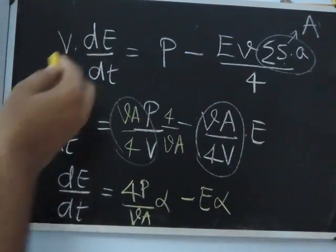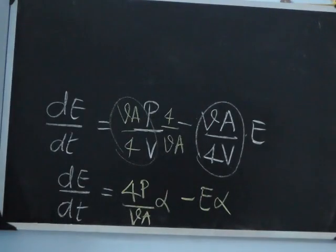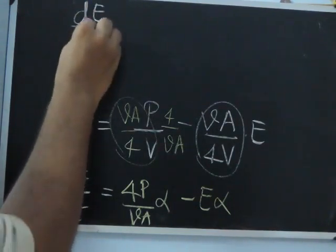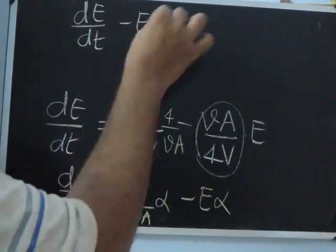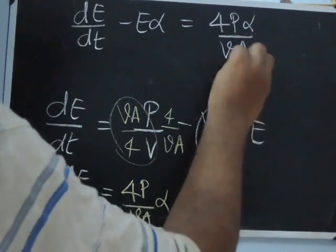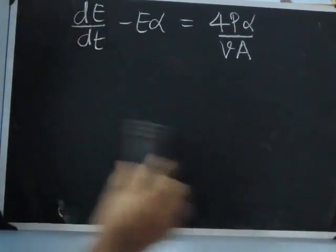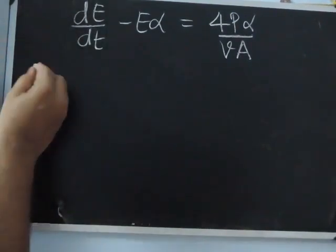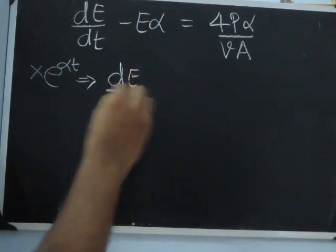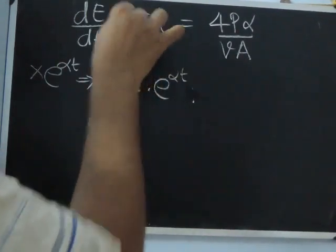So our alpha is cA by 4V. Now I just rearrange this equation. Bringing the E·alpha term to the left side, the equation becomes DE by DT plus E·alpha equal to 4P·alpha by VA. Now I am going to multiply the entire equation by e^(αt) — it's a simple trick.